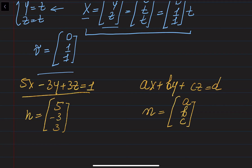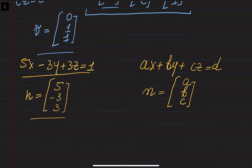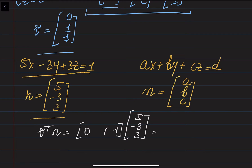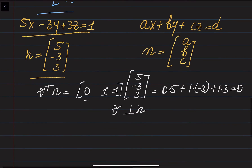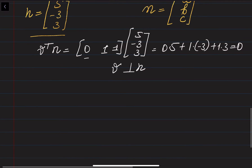We have direction vector v = (0, 1, 1) on the line and normal vector n = (5, −3, 3) to the plane. For the line and plane to be parallel, v must be orthogonal to n. Computing the dot product: v · n = 0·5 + 1·(−3) + 1·3 = 0 − 3 + 3 = 0. Since the dot product is zero, v is orthogonal to n, confirming the line is parallel to the plane.